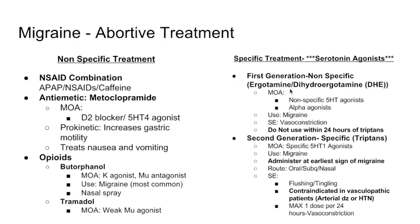The first-generation agent is ergotamine or dihydroergotamine. It's a nonspecific serotonin agonist and also has some alpha agonist activity, so it causes vasoconstriction. It's used for migraine. An important contraindication is that it should not be used within 24 hours of triptans, because combining them causes excessive vasoconstriction, which can be dangerous for the patient.